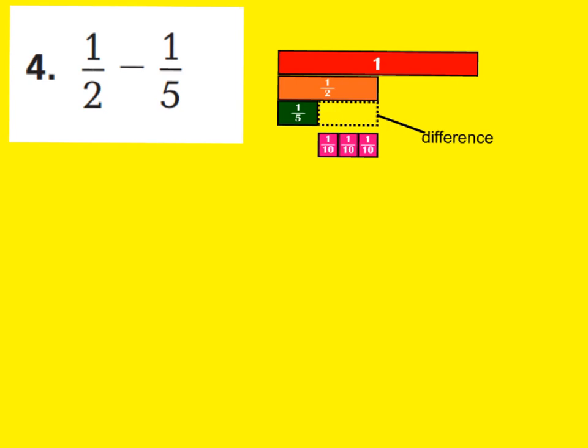Now, this portion right here will be the difference. Now, as you see, we have a 2 and a 5 for our denominators. Well, remember, with subtraction, you have to have like denominators. So, we're going to go ahead and list our multiples of 2 and 5. And the first one that shows up for 2 and 5 would have to be 10. Because for 5, we have 5, 10. For 2, we have 2, 4, 6, 8, 10. So, that's why I took the tenths pieces right here.